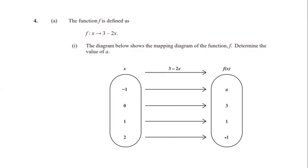If we put the given x values of 0, 1, and 2 into our equation, we'll see they map to the corresponding f(x) values of 3, 1, and negative 1. So when x is 0: 2 times 0 is 0, and 3 minus 0 gives us 3. When x is 1: 2 times 1 is 2, and 3 minus 2 gives us 1. When x is 2: 2 times 2 is 4, and 3 minus 4 gives us negative 1.